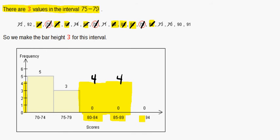And do the last category, 90 to 94. There's one, two, three, so we can make our bar up to three for our last column.